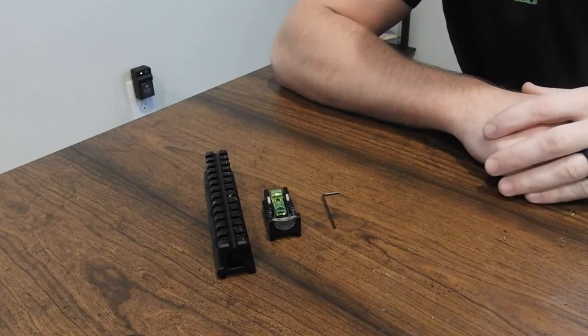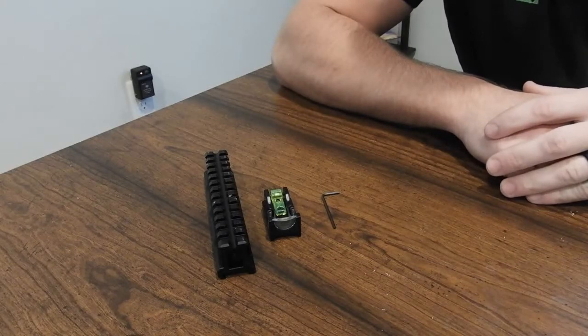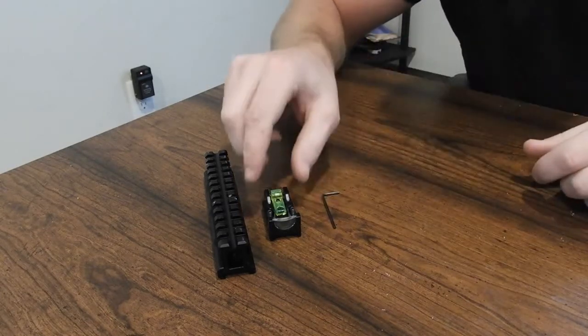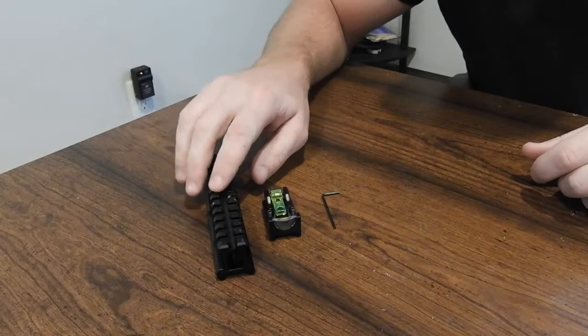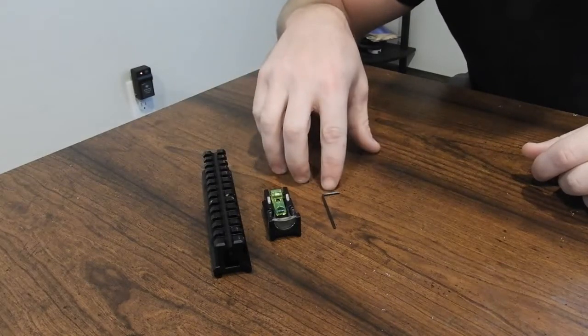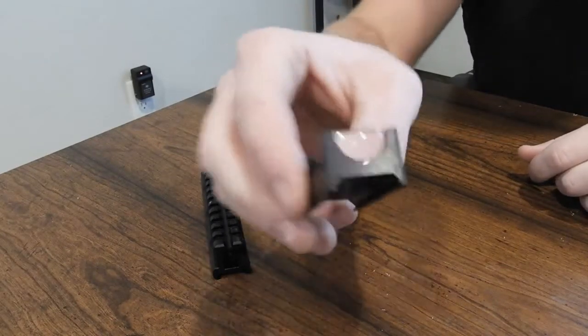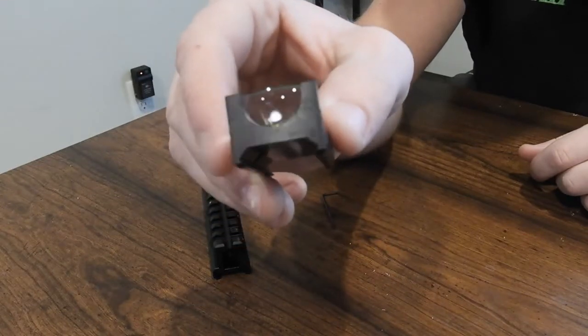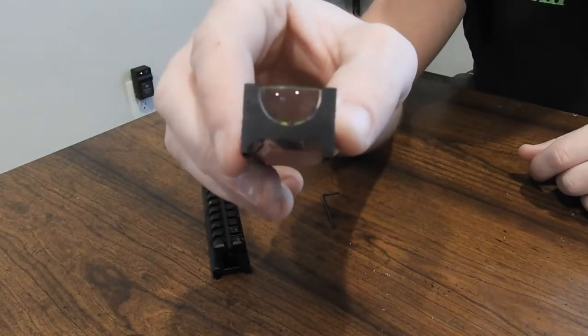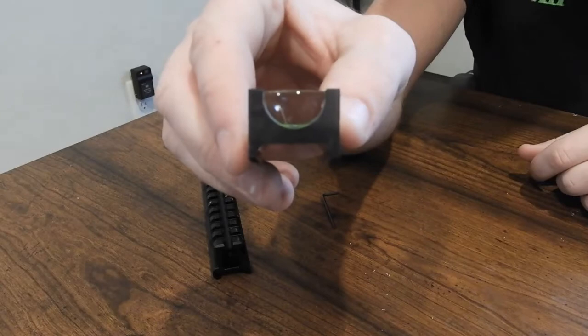This is going to work for the Micro See All Open Sight and the Micro Tritium See All Open Sight. So here's your sight, a standard Picatinny rail, and the Allen wrench provided. The sight has a Picatinny cut in the bottom of it. This will work on a standard Picatinny or Weaver rail system.